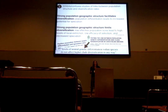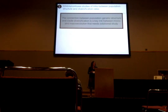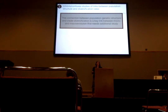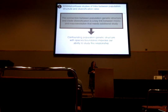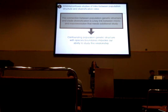This remains a really open question that needs additional study. The connection between population genetic structure and clade diversification is a key link between micro and macroevolution that we don't understand very well, and confounding population genetic structure with species boundaries fundamentally impedes our ability to study this relationship.